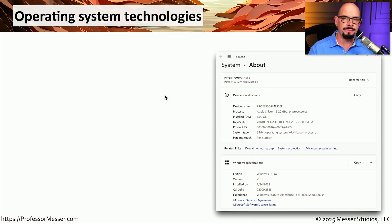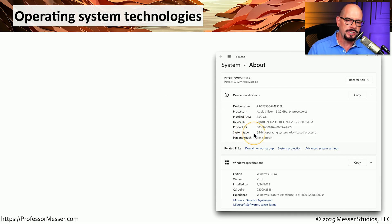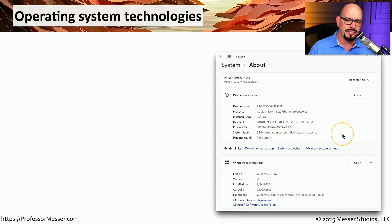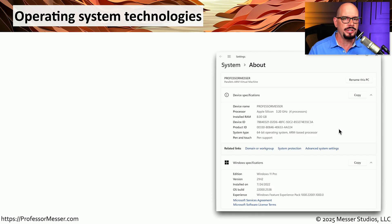If you look at the system information for your computer, you'll see a lot of interesting information. For example, on this computer, the system type is a 64-bit operating system, and it is an ARM-based processor. You may be wondering, what do those specifications refer to?